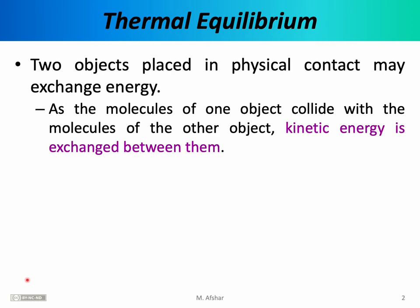It is an observational fact that two objects — for example, a block of aluminum and a block of copper — when placed in physical contact, may exchange energy with each other. There are several different mechanisms for this exchange of energy, but for now we're primarily interested in molecular collisions. As the molecules of one object, say the block of copper, collide with the molecules of the other object, the block of aluminum, they may exchange kinetic energy between them.